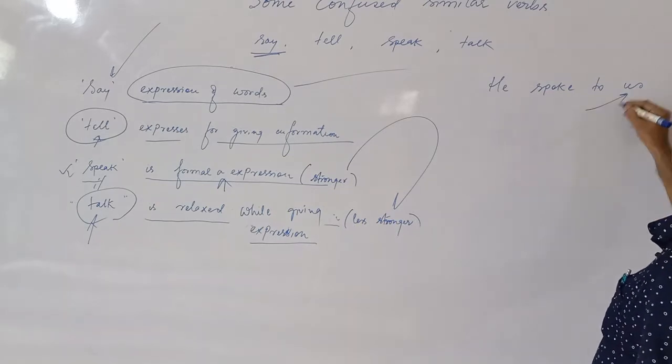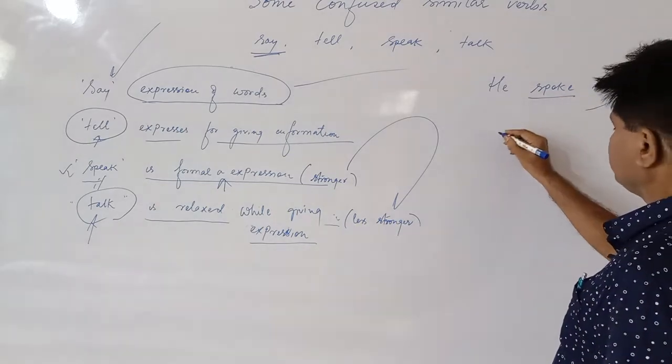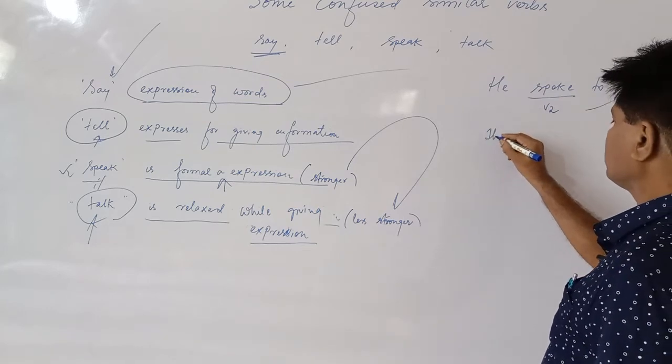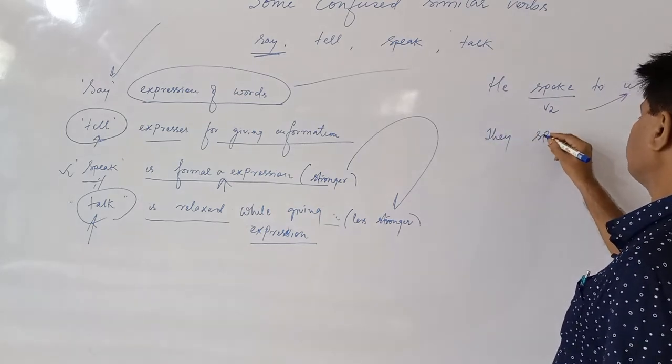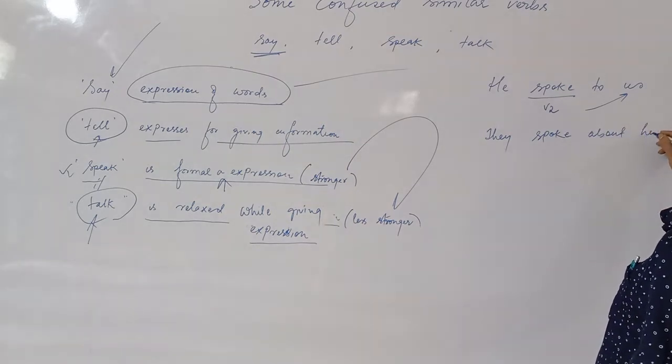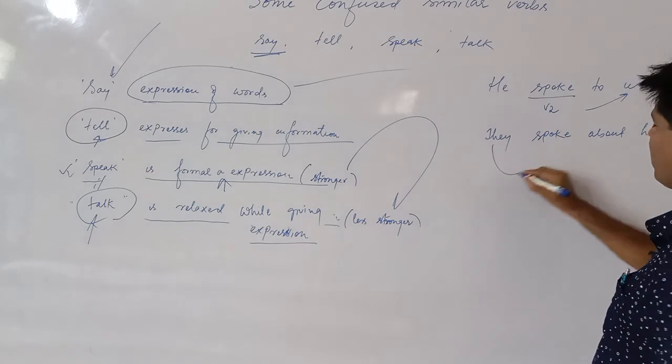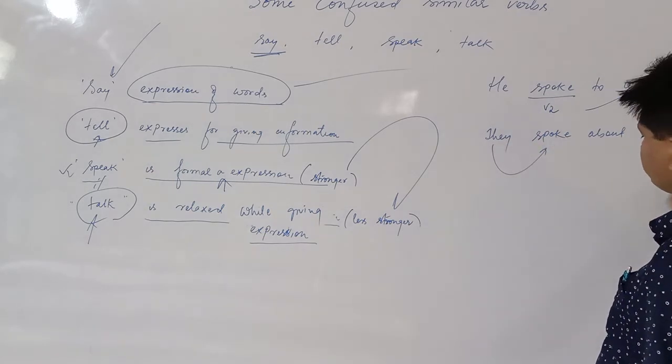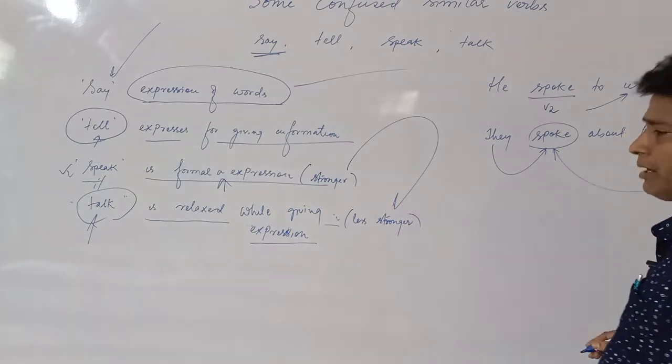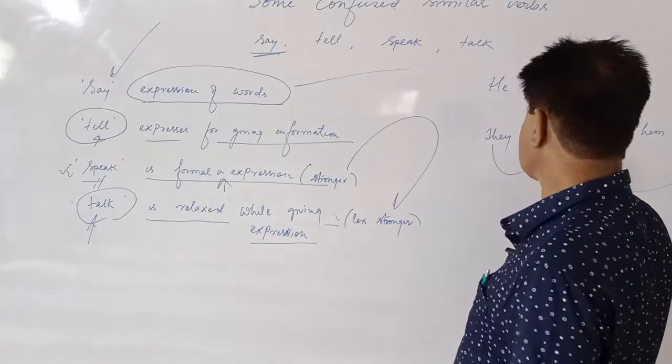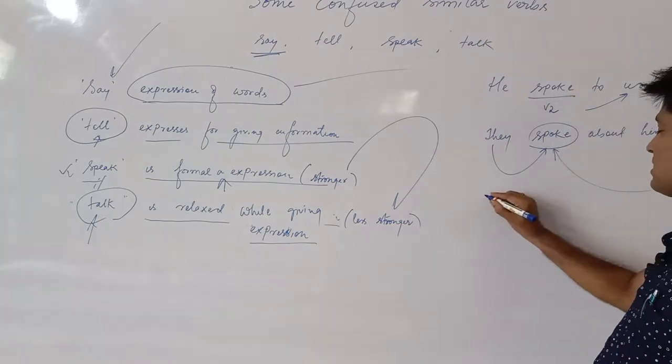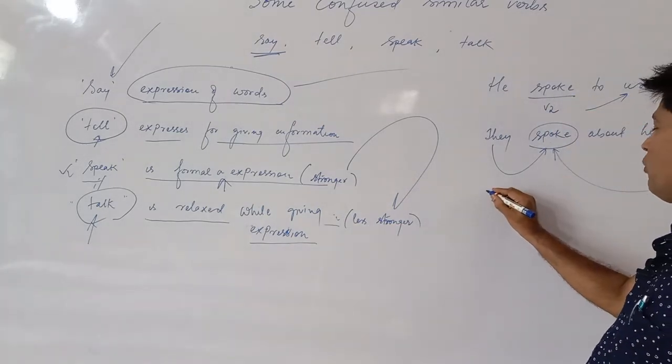They spoke about him. So it is more formal when he gives the expression to a group of people or more than one person. Then you can use speak or spoke. Spoke is in the past form and speak is in the present form.